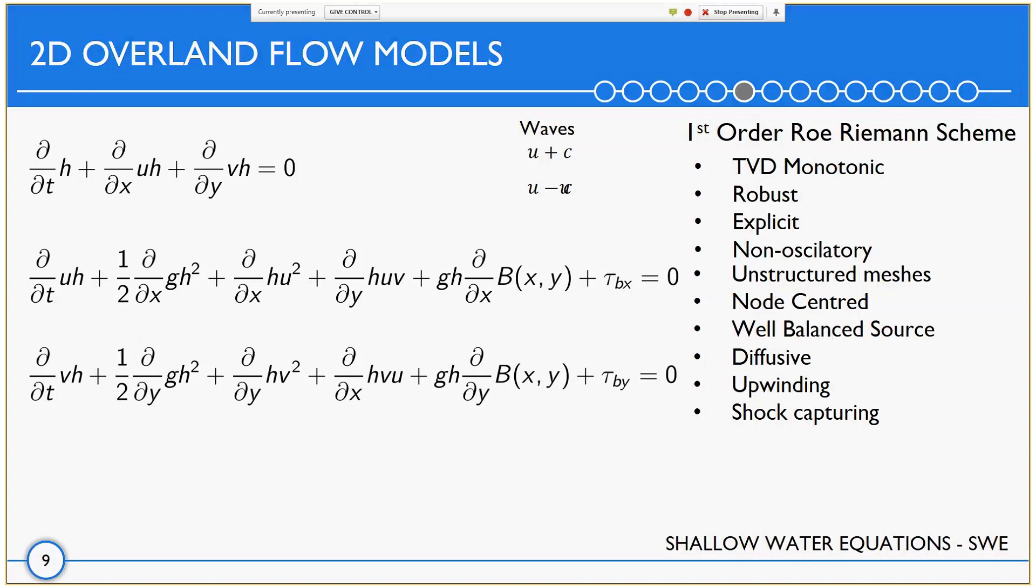For the surface models, the three models used were the shallow water equations, the local inertial equations, and diffusive wave models. The shallow water equations are as presented. The first one is the mass equation. The second and the third are the momentum, according to X and Y, respectively. The second and third are composed of local accelerations, pressure terms, pressure acceleration terms, convective accelerations, bed elevation terms, and friction terms.